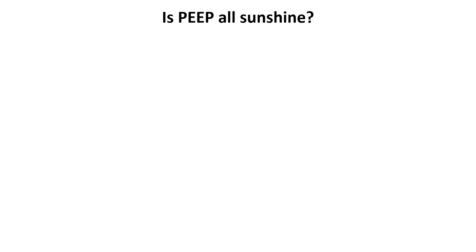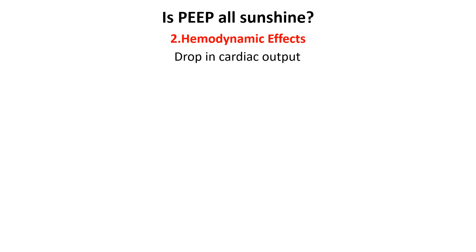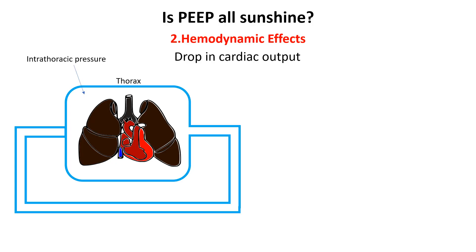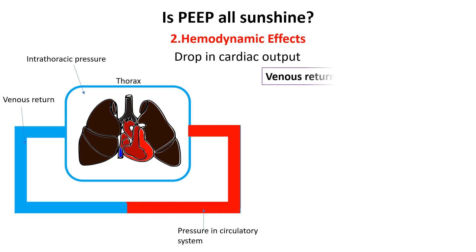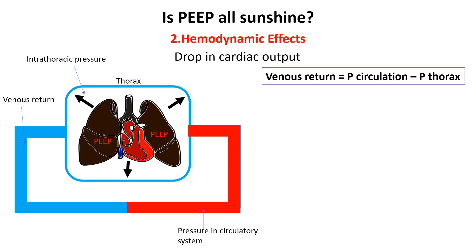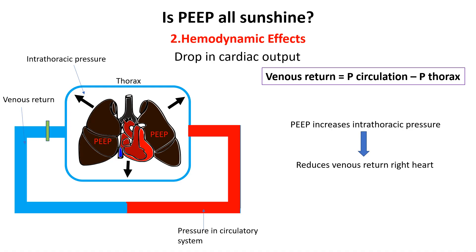The other problem PEEP can cause is a drop in cardiac output. Venous return to the heart is very dependent on the difference in pressure between that in the thoracic cavity and that in the circulatory system. In normal breathing, the respiratory system operates as a negative pressure system. When we inhale, the diaphragm moves downward, expanding the chest cavity and creating a drop in intrathoracic pressure, which pulls air into the lungs and reduces pressure on the right side of the heart, making it easier for blood to return from the veins. When PEEP is applied, it maintains positive pressure in the lungs at the end of exhalation, causing a rise in intrathoracic pressure, which reduces the pressure difference between the veins and the right side of the heart, leading to decreased venous return and reduced cardiac output.